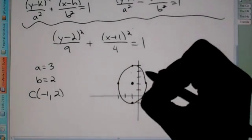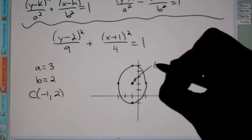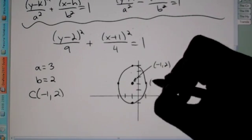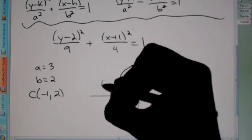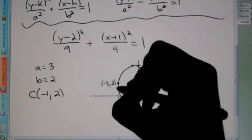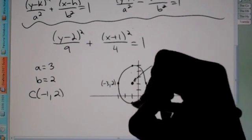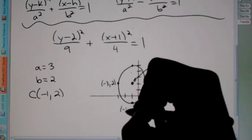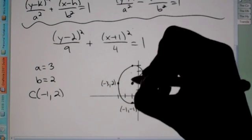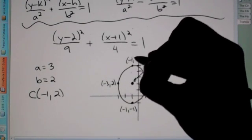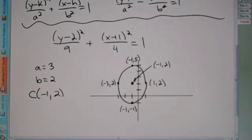Now if you were to label this, this would be negative 1, 2. This would be over 1, up 2. This one would be back 3, so negative 3, up 2. This one would be back 1, down 1, so negative 1, negative 1. And lastly, this would be negative 1, up 1, 2, 3, 4, 5. Negative 1, 5. Alright? So that's how we handle it if the center is not at the origin.